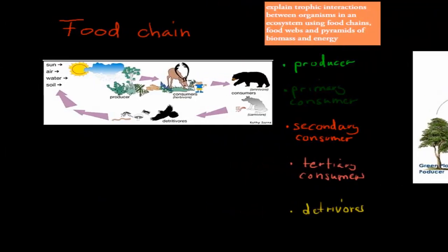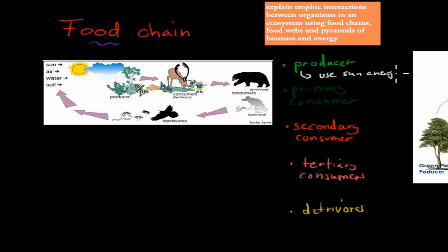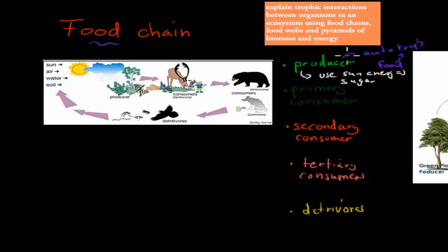First we're going to cover the food chain, and there are a couple of different words to introduce. The first is producers. A producer is something that uses energy from the sun and uses that sun energy to make its own sugar - its own food. Another word for these are autotrophs. Trophic means food, and auto comes from automatic, so it means it can make its own food. Producers are the ones that can make their own food using energy from the sun. Examples include plants and algae.